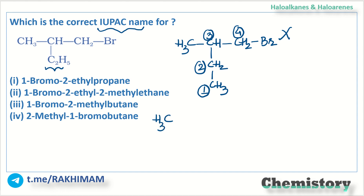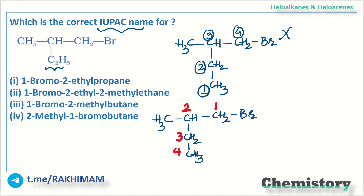Now if you look from here: CH3, then CH, then CH2 — here comes Br — then CH2, and then CH3. I should start numbering from that carbon atom where the substituents get the lowest position numbers. If I give this position number 1, this is 2, then 3 and 4 — so the parent chain has 4 carbon atoms. At second position I have a methyl group, and at third position I also had a methyl group, so this particular numbering is preferable.